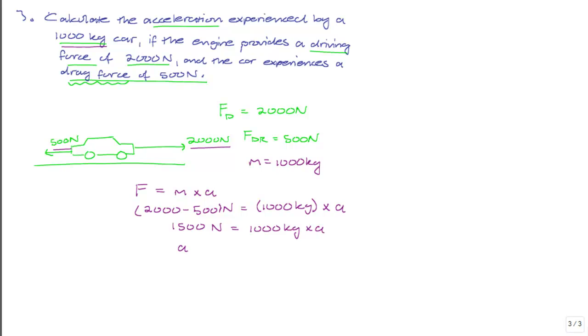If we want to find the acceleration, then A is equal to 1500 Newtons divided by 1,000 kg. Solving for A, we carry the 1,000 to the other side of the equation, to the other side of the equal sign. And since it's multiplying A on the right-hand side, or RHS, then it will be dividing the 1500 Newtons when you move it over to the left-hand side.